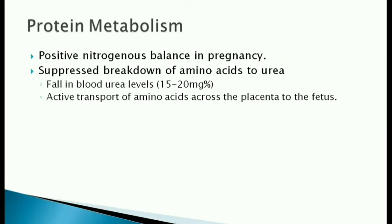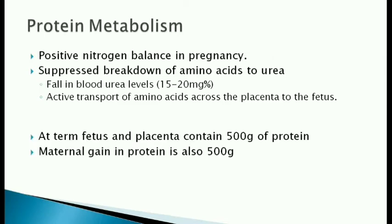Protein metabolism: There is a positive nitrogenous balance throughout pregnancy. The growing fetus needs more protein and amino acids are actively transported across the placenta to the fetus. To meet this extra need, breakdown of amino acids into urea is suppressed. This causes a fall in the mother's blood urea levels. At term, the fetus and placenta contain 500g of protein and maternal gain in protein is also 500g.